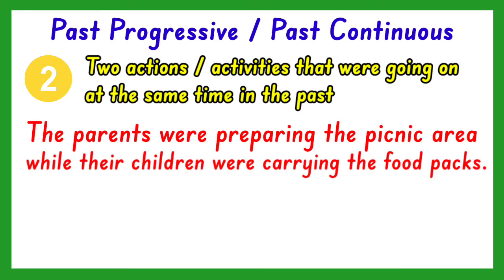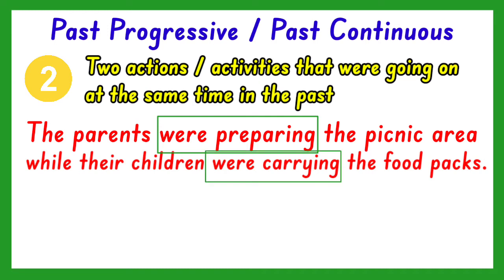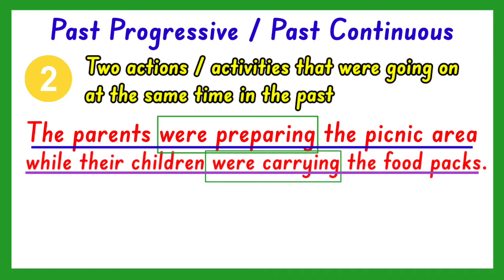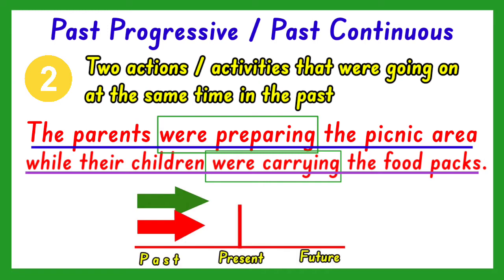Another one: The parents were preparing for the picnic area while their children were carrying the food packs. The verbs in the past progressive form in this sentence are were preparing and were carrying. Both verbs are in the past progressive tense because the two actions were happening at some point in the past and at the same time.